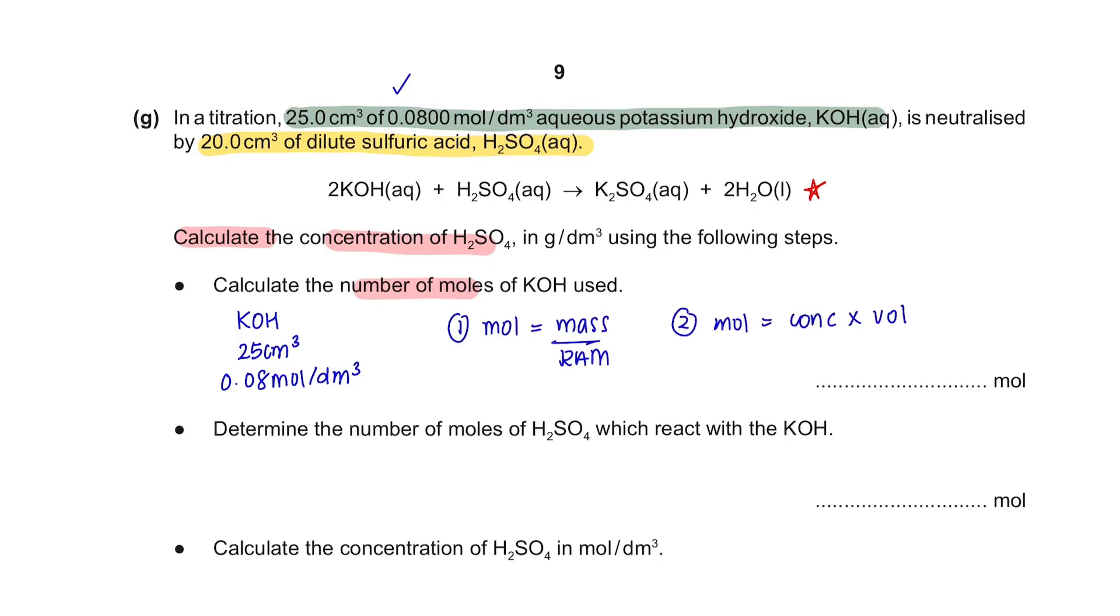There are two formulas related to mole. One is mass over the molar mass and the second one is concentration by volume. Since we have the concentration and volume, we are going to use this formula. The concentration is 0.08 mole per dm³ and the volume given is 25 cm³. So we have to convert this to dm³, dividing by 1000 giving you 0.025 dm³. And your final answer is 0.002 moles, or 2 times 10 to the power of negative 3 moles.